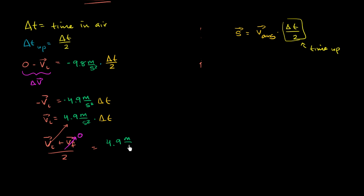So our average velocity is just going to be this stuff divided by 2. So it's going to be 4.9 meters per second squared times delta t over 2. So this right here, this is our average velocity.